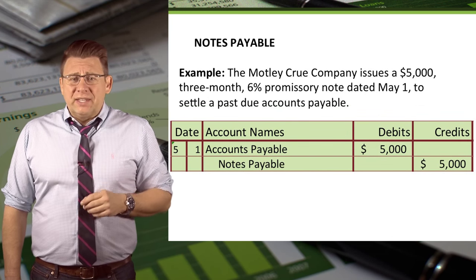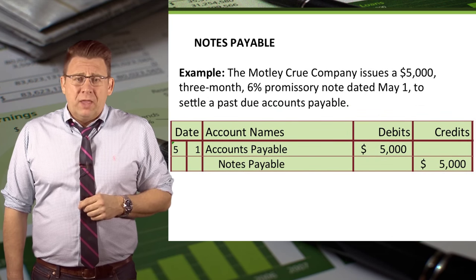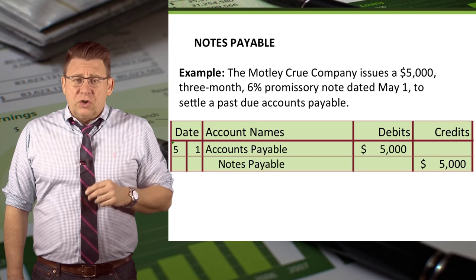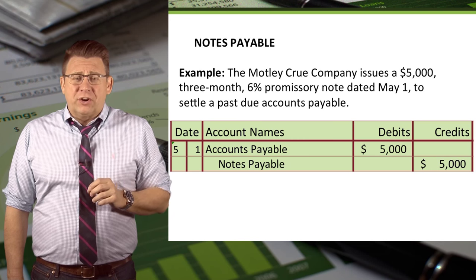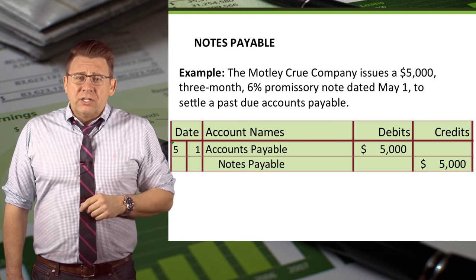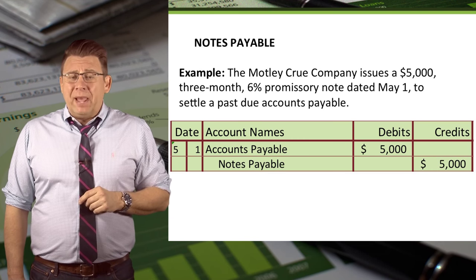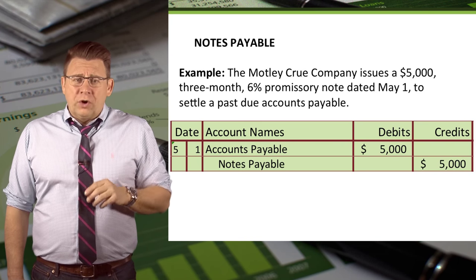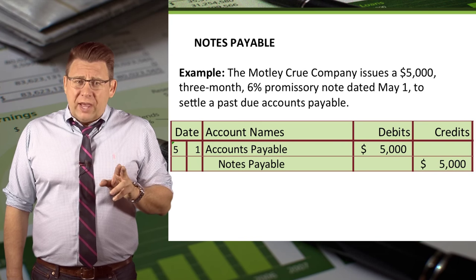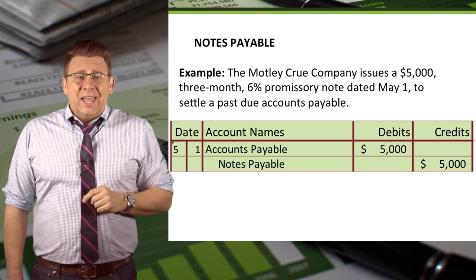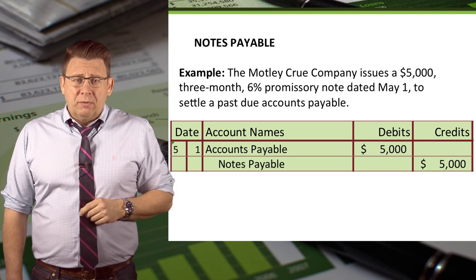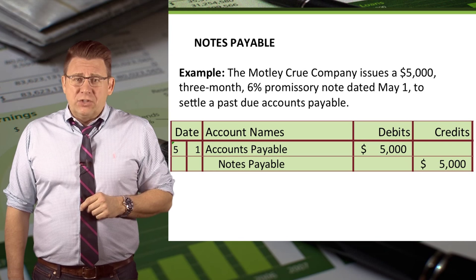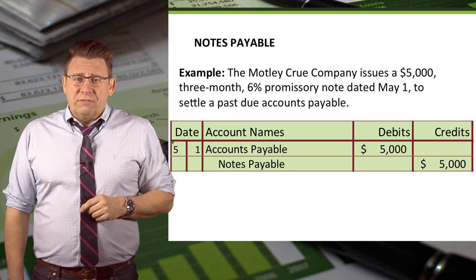Let's look at a typical example. The Motley Crue Company issues a $5,000 three-month 6% promissory note dated May 1 to settle a past due accounts payable. The journal entry to record the note is a debit to accounts payable for $5,000 and a credit to notes payable for $5,000.